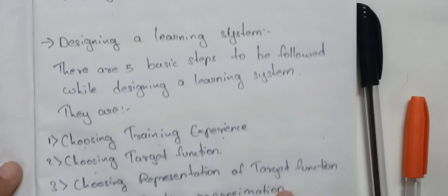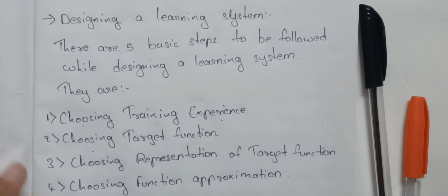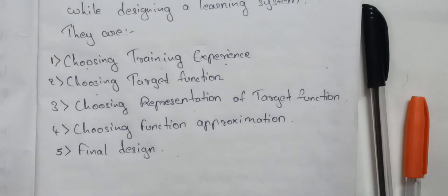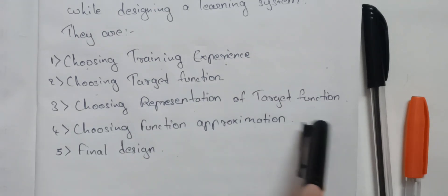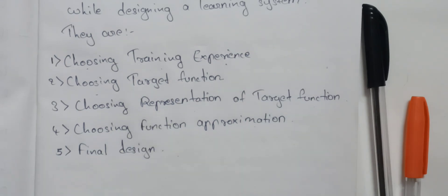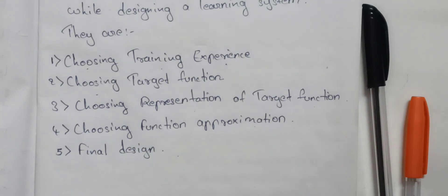There are 5 basic steps for designing a learning system: choosing training experience, choosing target function, choosing representation of target function, choosing function approximation, and final design. These steps will be followed in our learning system design. In the next videos, I will explain each topic briefly.